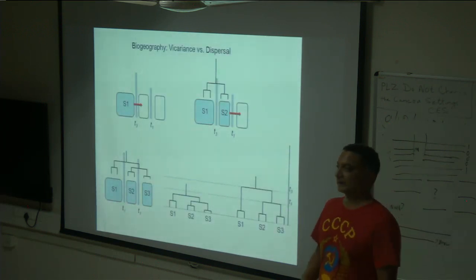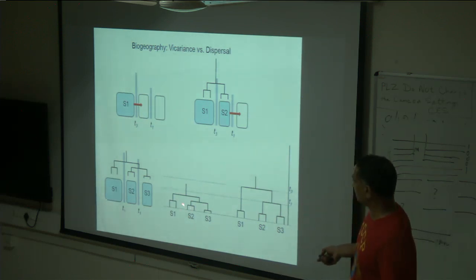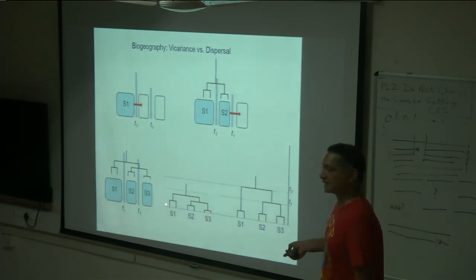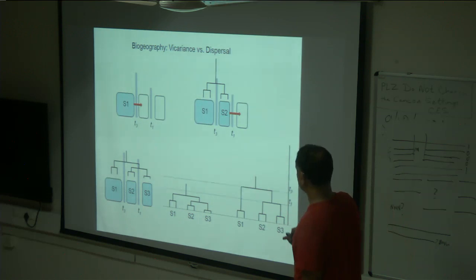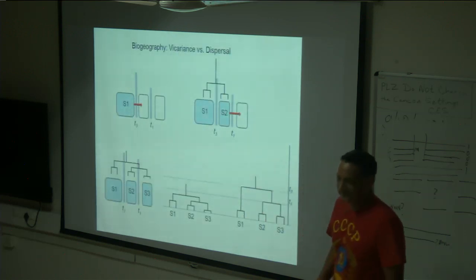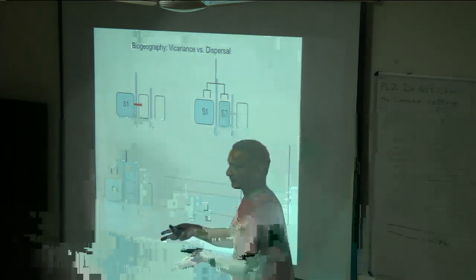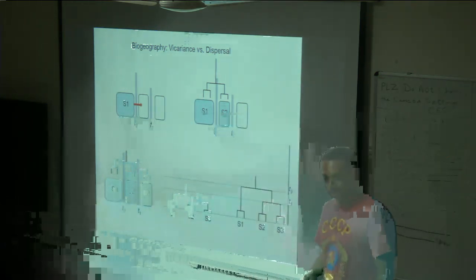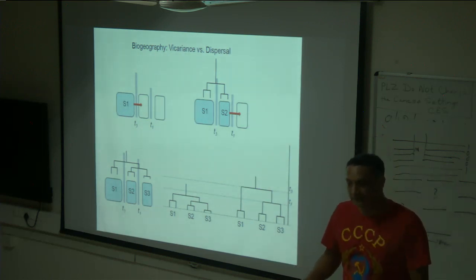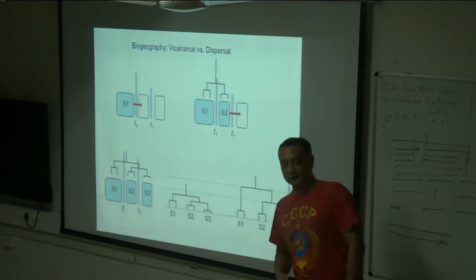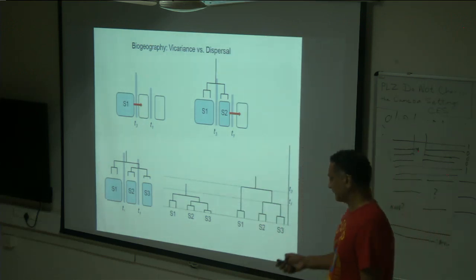How do you distinguish between vicariance and dispersal? That is where time trees are important, because the topologies are identical. In vicariance, the timing of the speciation event is congruent with the time when the barriers emerged. So you date the phylogeny, then look at geological evidence for when those barriers emerged. If the radiation is younger than those barriers, then you know it's dispersal.